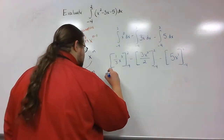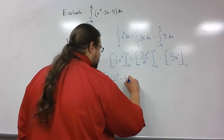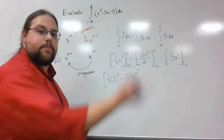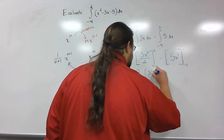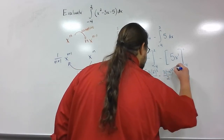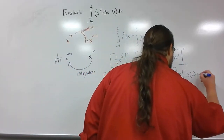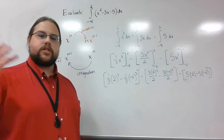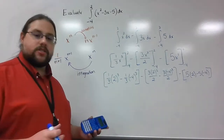Now I'll start plugging in the bounds. For the first term, I take one third of 2 cubed minus one third of negative 4 cubed — plugging in the top number first, then subtracting the bottom number. For the second term, it's 3 times 2 squared over 2 minus 3 times negative 4 squared over 2. For the last part, it's 5 times 2 minus 5 times negative 4. From here we're down to arithmetic — just plugging this into the calculator.